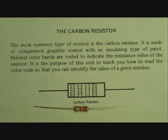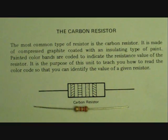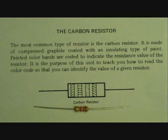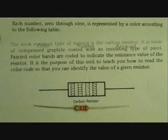The carbon resistor is the most common type of resistor. It's made of compressed graphite coated with an insulating type of paint. The painted color bands are coded to indicate the resistance value of the resistor. It is the purpose of today's teaching to teach you how to read this code so you can identify the value of carbon resistors.